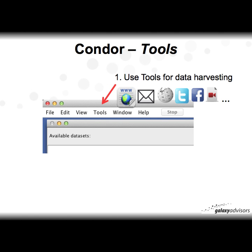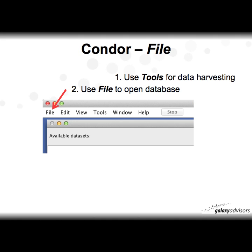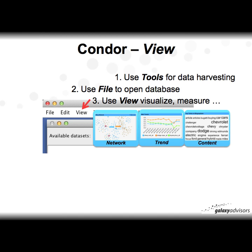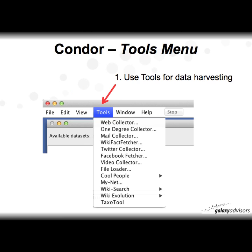Here's the basic console menu. Going across: Tools is where you begin — you use Tools for data harvesting from the web, email, Wikipedia, Twitter, Facebook, videos, and more. Next, you use File to open the data saved from your harvesting activity. Finally, you use the View command to visualize and measure those networks. It's in the View menu where you'll find the most sophistication and spend most of your time.